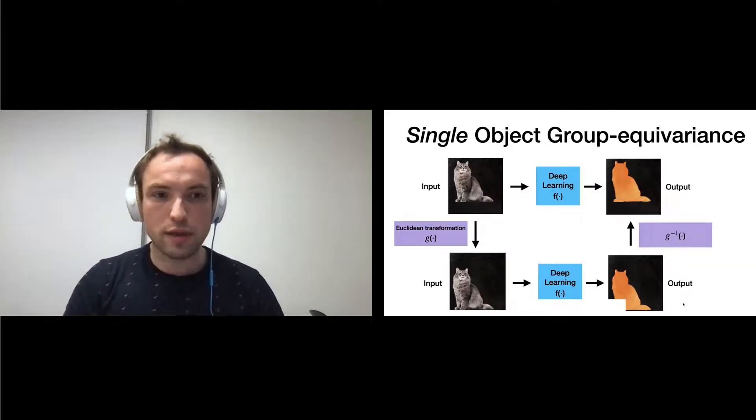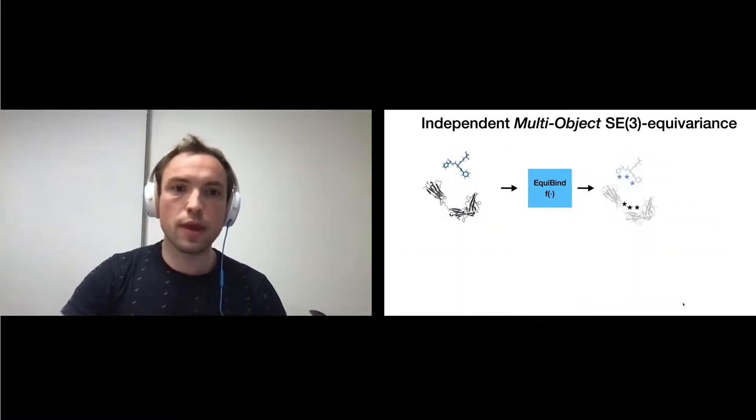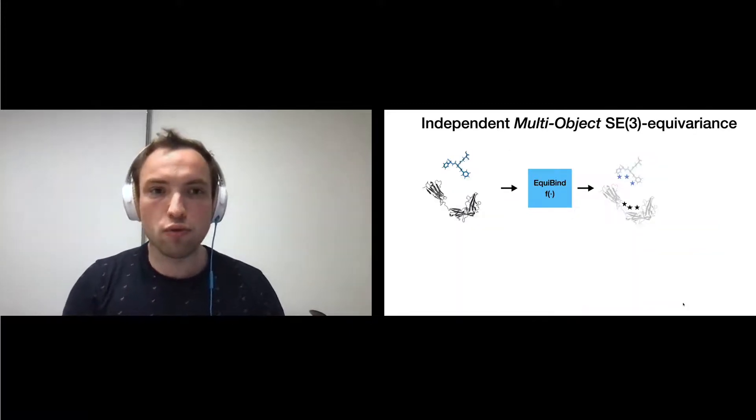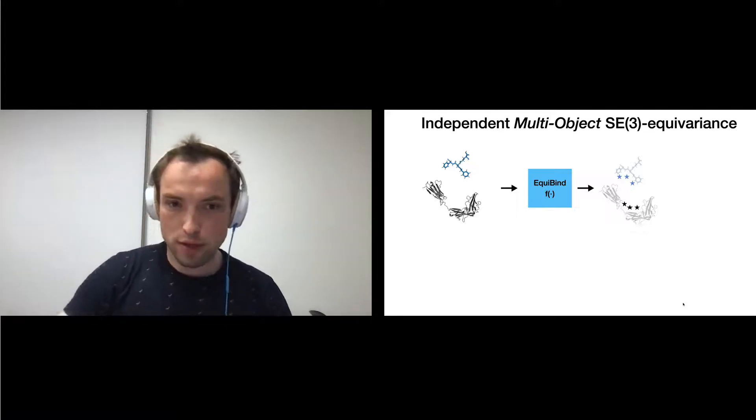Importantly, we take this idea of single-object group equivariance, which was developed initially for convolutional neural networks, and now we generalize this for multi-objects to incorporate independent SE(3) transformations.